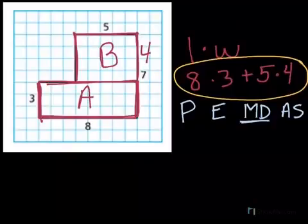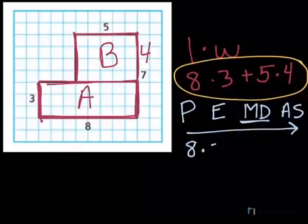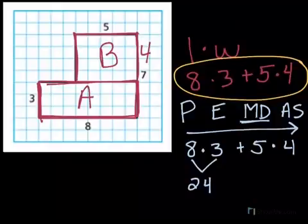So I'm going to start with multiplication. Remember it's always left to right. So going left to right, I see 8 times 3. Let me rewrite the expression real quick. So 8 times 3 is 24. I'm not going to add anything yet because I still have to multiply. 5 times 4 is 20.